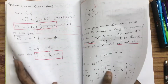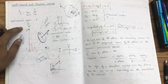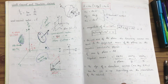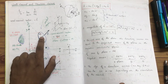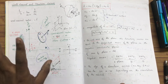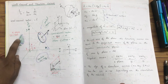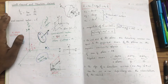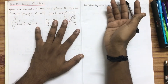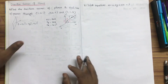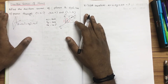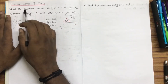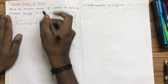The projection of n-cap onto a particular plane will give the area component of n-cap. When we multiply the area of that plane with nx, it will give the projection of that surface onto the y-z plane. We have to find the direction cosines of planes in each case.